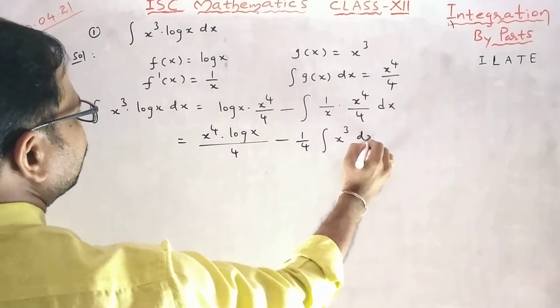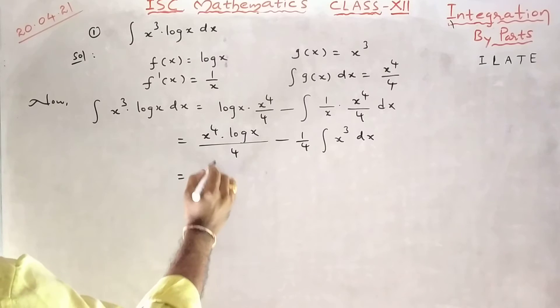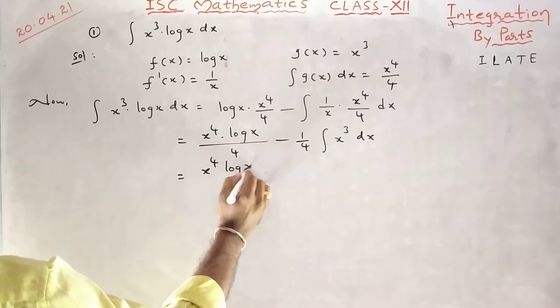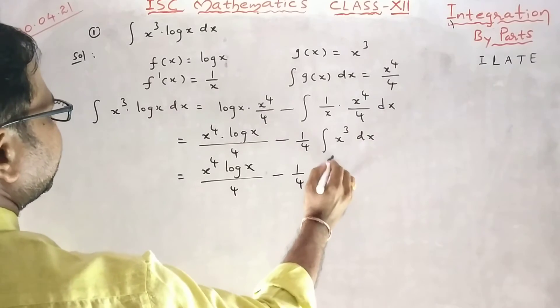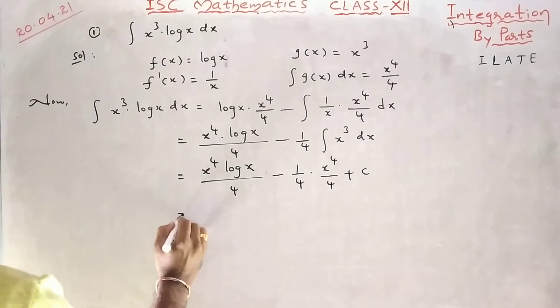We can write x cube integration directly. Minus x cube integration is x power 4 by 4 plus c. So x power 4 log x by 4, x power 4 by 16 plus c.